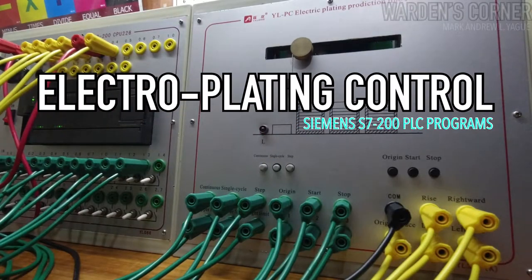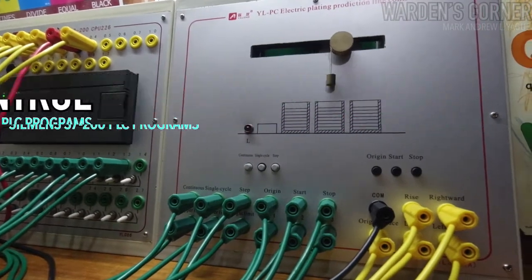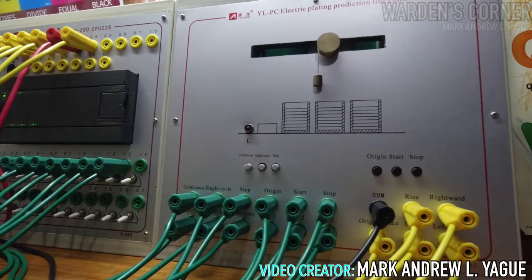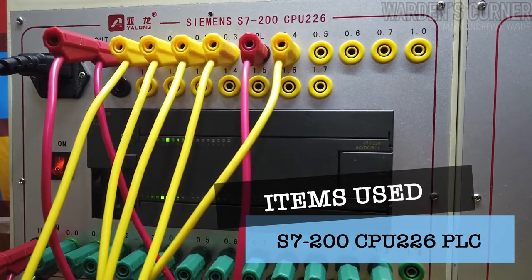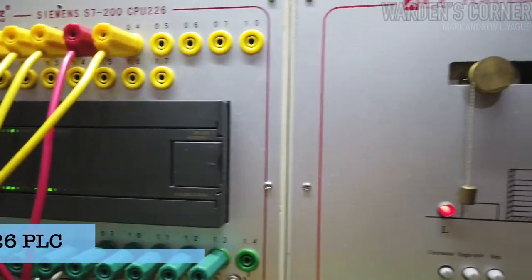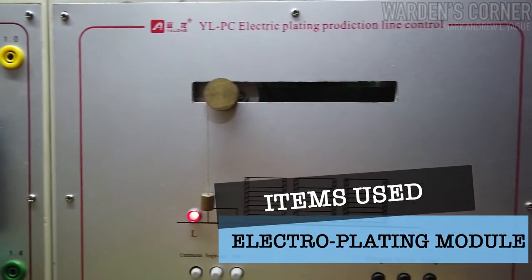This is electroplating control under Siemens S7-200 PLC programs. It was programmed by Sir Mark. The items used for this control program are Siemens PLC CPU-226 and electroplating module.